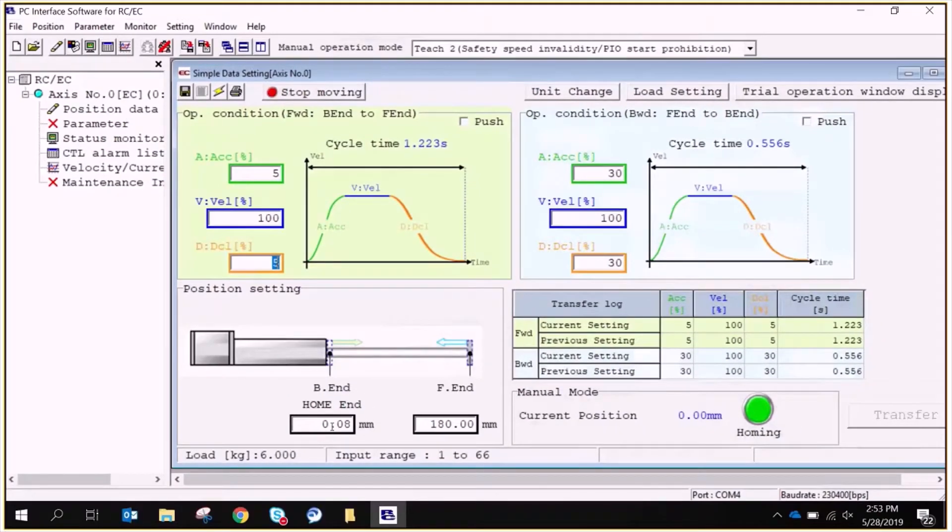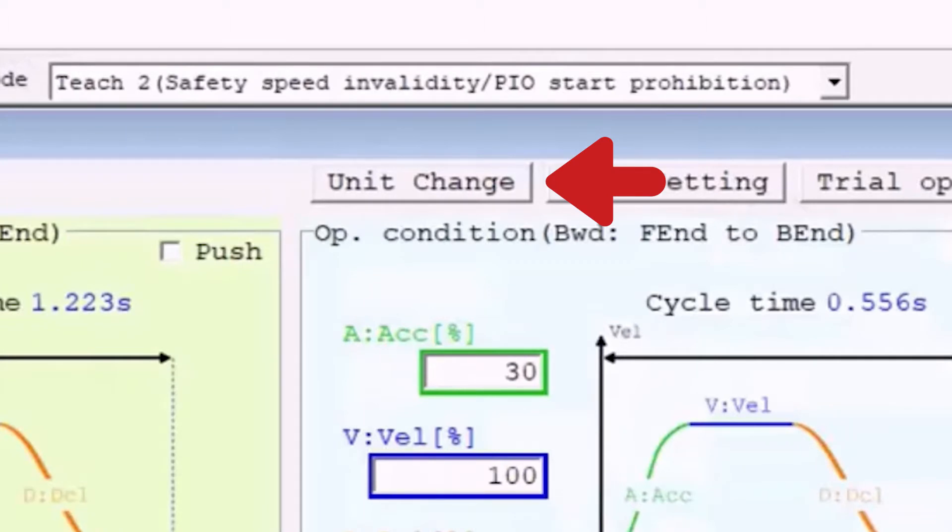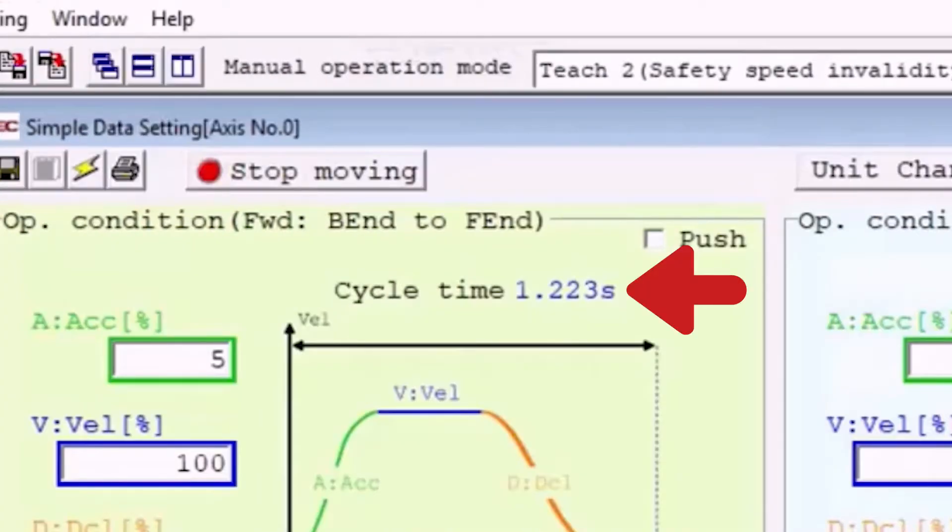Right now, we have it set as a percentage of the max parameter, but we can click on unit change in the top center of the screen to change it to a linear value, such as millimeters per second. Notice that the software automatically calculates our cycle time.